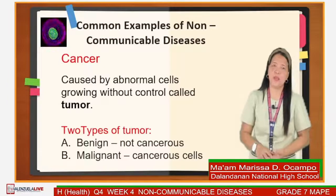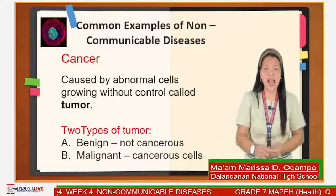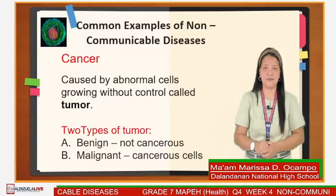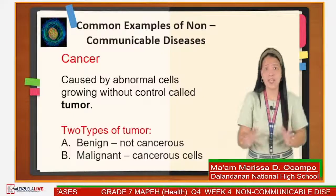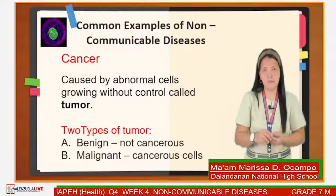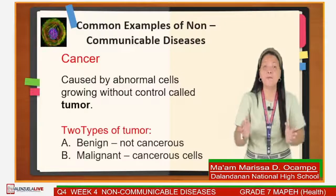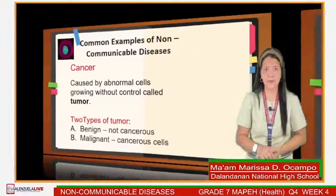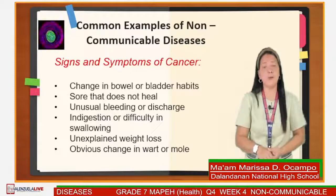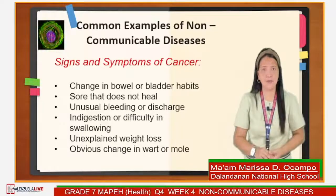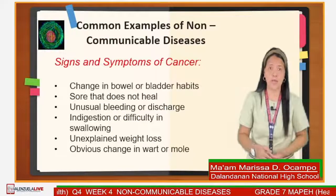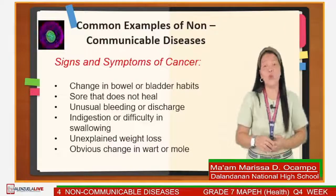Cancer is caused by abnormal cells growing without control, called a tumor. There are two types of tumor: benign — masses of cells that are not cancerous and do not spread; and malignant — cancerous cells that may spread to other parts of the body by moving along the blood vessels. Signs and symptoms of cancer include change in bowel or bladder habits, a sore that does not heal, unusual bleeding or discharge, indigestion or difficulty in swallowing, unexplained weight loss, and obvious change in a wart or mole.